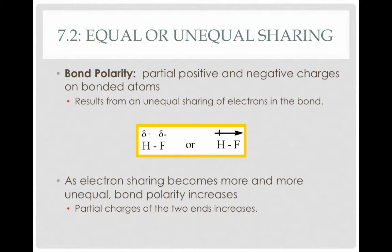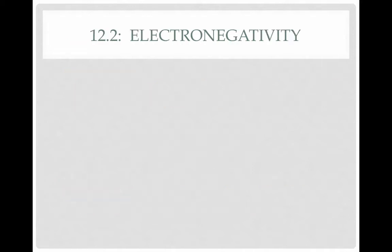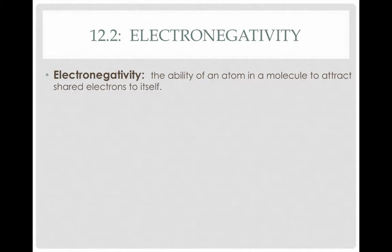As electron sharing becomes more and more unequal, bond polarity will increase. As fluorine hogs more and more electrons toward itself, it becomes more and more negative and hydrogen becomes more and more positive, increasing the partial charges on each end. Why does fluorine tend to attract the electrons in the bond toward itself more than hydrogen? This is due to electronegativity—the ability of an atom in a molecule to attract shared electrons to itself. More electronegative atoms will attract that pair of electrons to themselves more than less electronegative atoms.